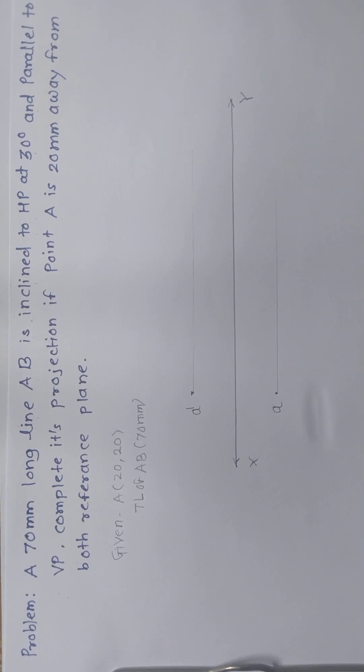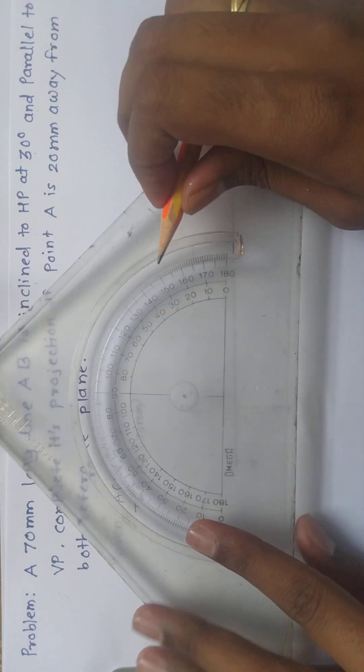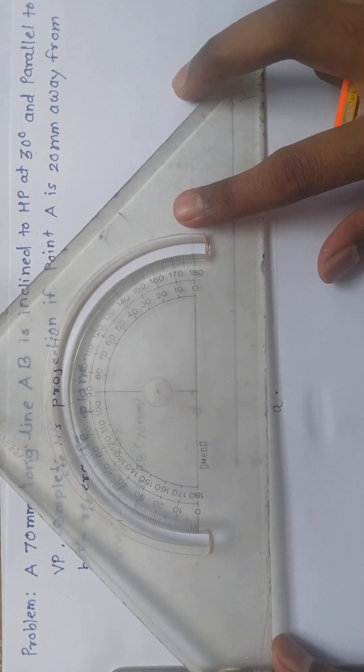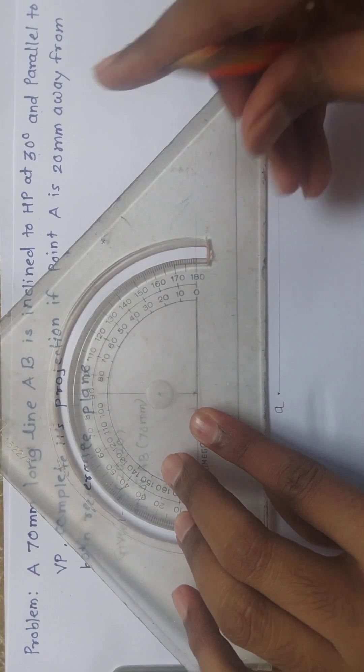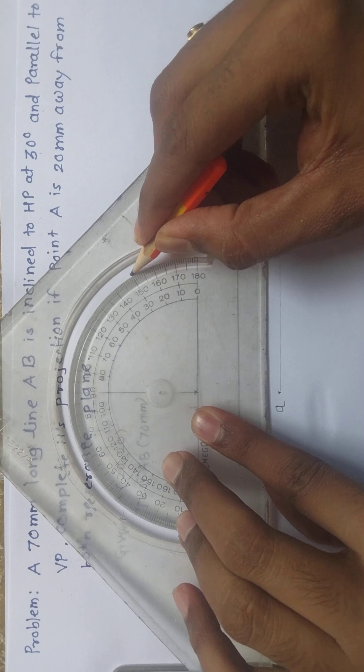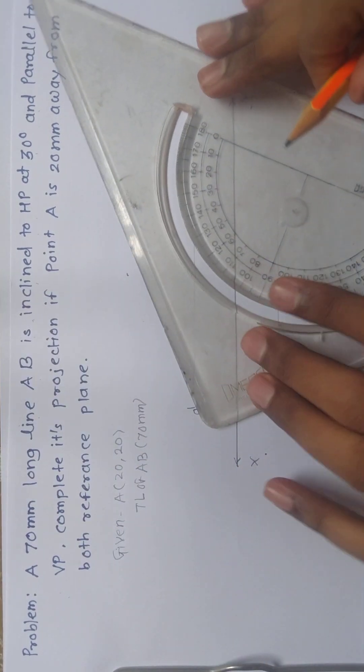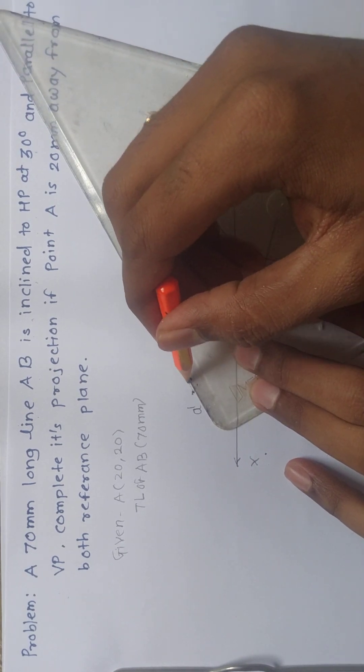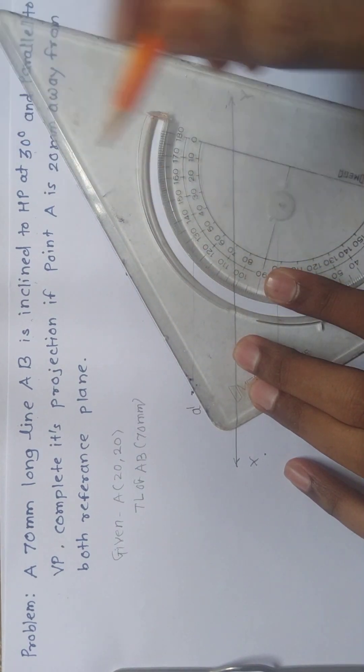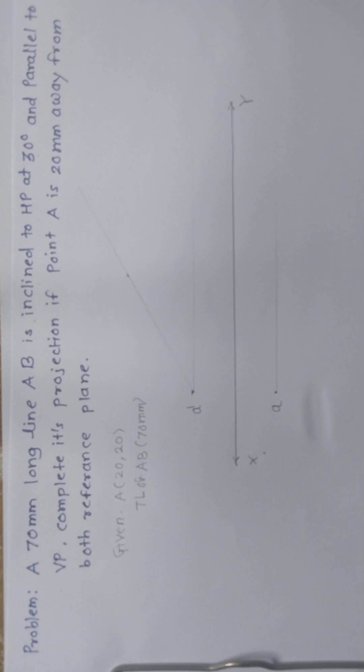Now the line is inclined to HP. You can draw a faint line here, and now you have to mark an angle of 30 degrees. Draw a faint line and mark 70mm.